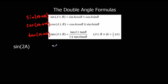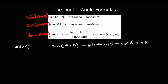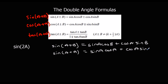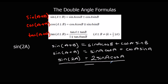We are going to use sin(A+B) = sin(A)cos(B) + cos(A)sin(B), and what we are going to do is change B to A as well. That gives us sin(2a) = sin(a)cos(a) + cos(a)sin(a), so there is our double angle formula. We have got two sin(a)cos(a) terms, so sin(2a) = 2sin(a)cos(a). That is a really useful formula.